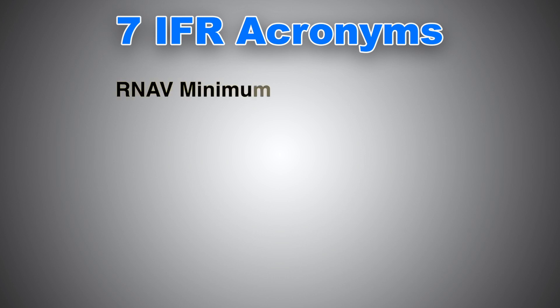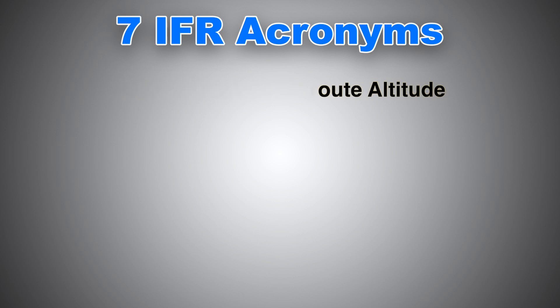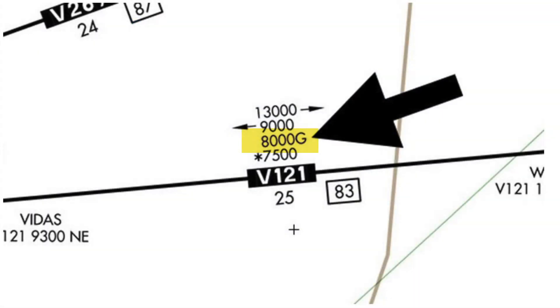Keep in mind that dropping below the MVA, or Minimum Vectoring Altitude, you might drop from ATC's radar as well. Last, RNAV Minimum En Route Altitude — RNAV MEAs are depicted on some IFR en route low altitude charts, allowing both RNAV and non-RNAV pilots to use the same chart for instrument navigation. This is how it looks on an IFR chart.